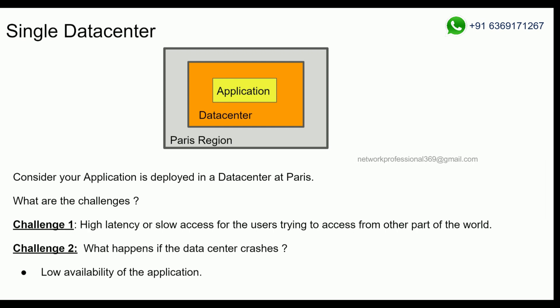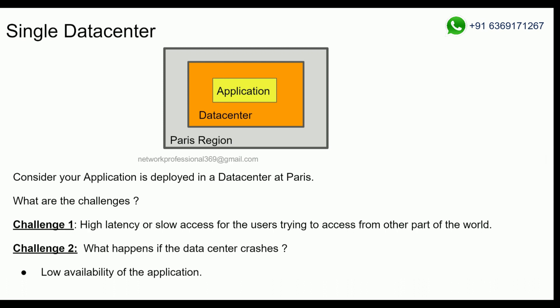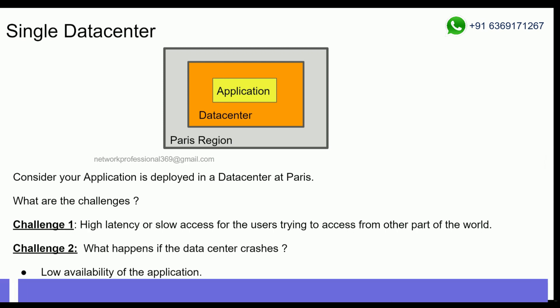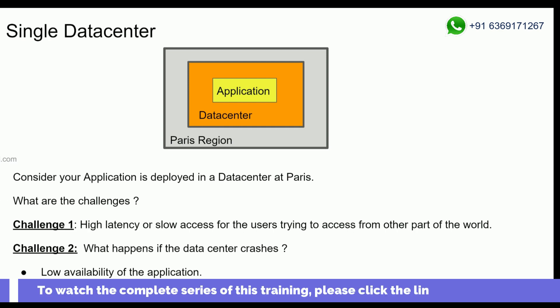What is the main challenge? Our application is deployed in a data center in Paris. What happens if that particular data center goes down? If that data center, for any reason, crashes or the data center is down, our application will become unavailable — until the data center is repaired and restored. So, these are the two main challenges.